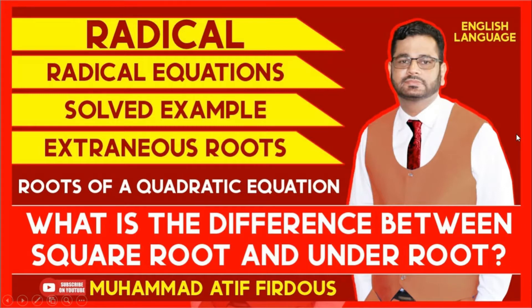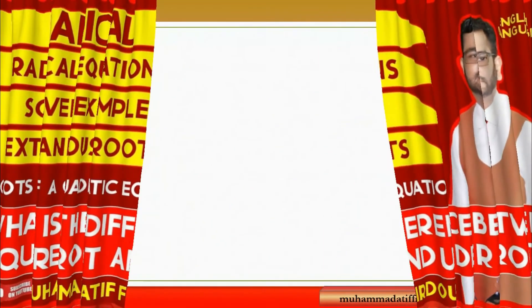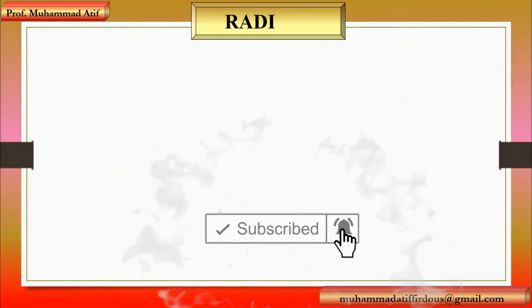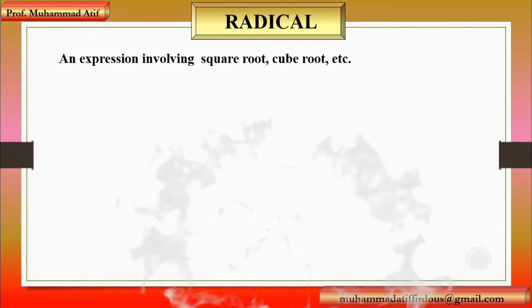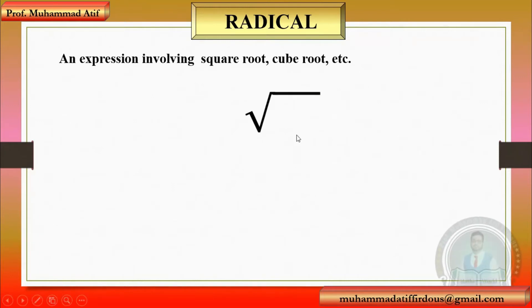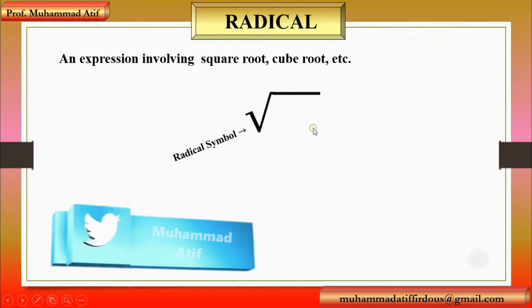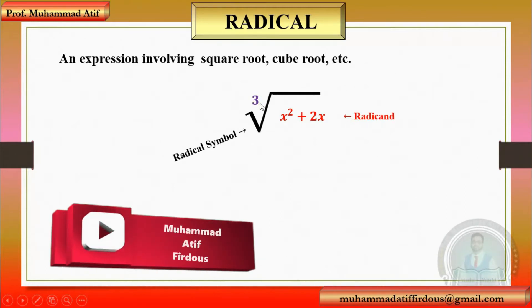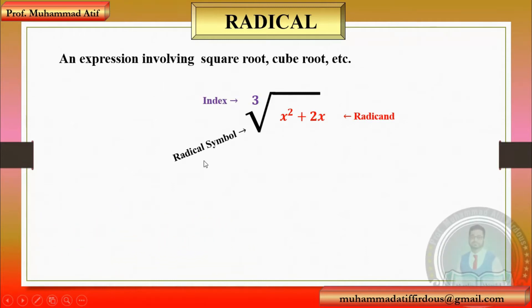So we start with some basic definitions — we start with what is a radical. An expression involving square root, cube root, 4th root, 5th root, etc. is called a radical expression or simply radicals. The symbol of radical is the radical symbol. If we have a function, say x squared plus 2x, under this radical sign, then this function is called a radicand. The third component is the value, which is called the index. So you should know the difference between radical symbol, radicand, and index.